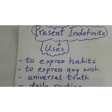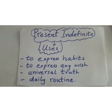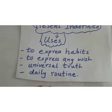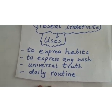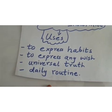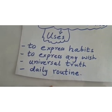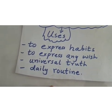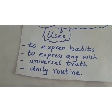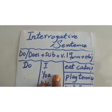Let's have a quick review of present indefinite tense — when do we use it? We use present indefinite tense to express habits, to express any wish or desire. From the beginning of time it will always happen — for example, the sun rises in the east, the sun sets in the west. This is a universal truth. We also use it to describe daily routine — for example, I go to school at 7:30. For daily routine we use present indefinite tense.